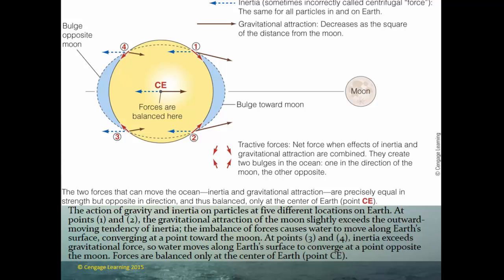The action of gravity and inertia on particles at five different locations on earth are shown here. At points one and two, the gravitational attraction to the moon slightly exceeds the outward tendency of inertia, causing water to converge at a point toward the moon. At points three and four, inertia exceeds the gravitational force, so water converges at a point opposite the moon. This motion of water along the earth's surface creates a bulge toward the moon and a bulge opposite it. The earth revolves underneath that bulge, and that is how we go from high tide to low tide.